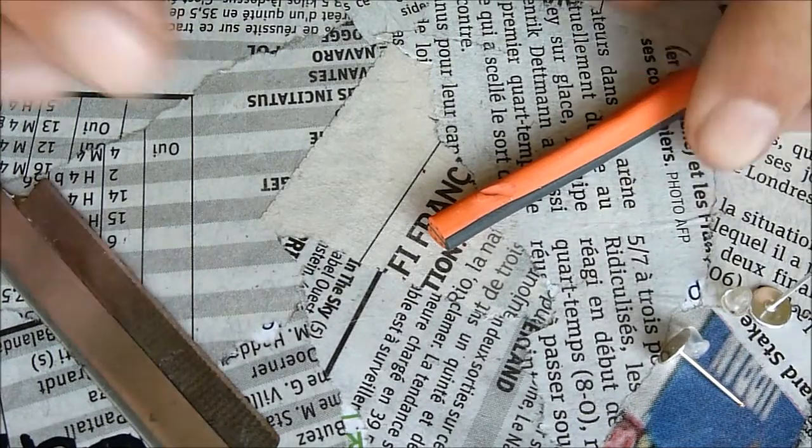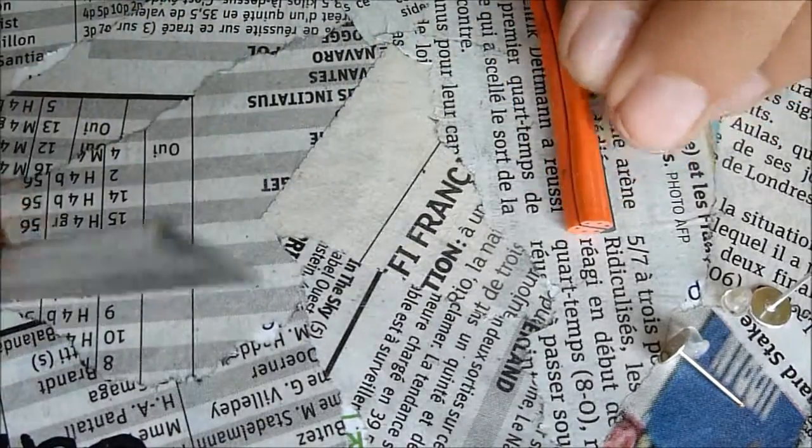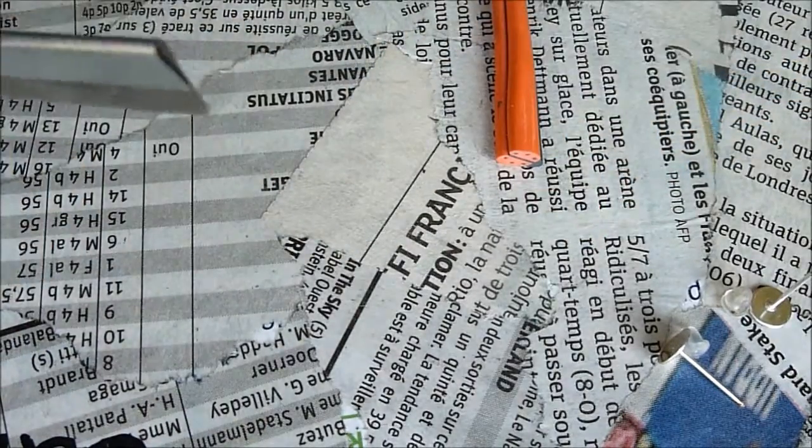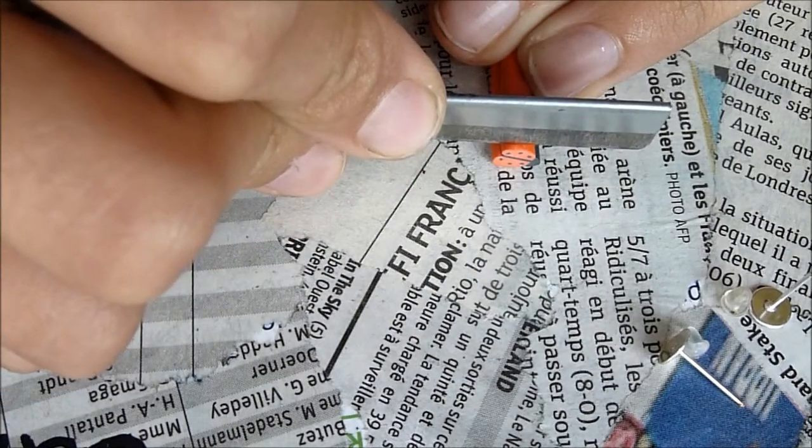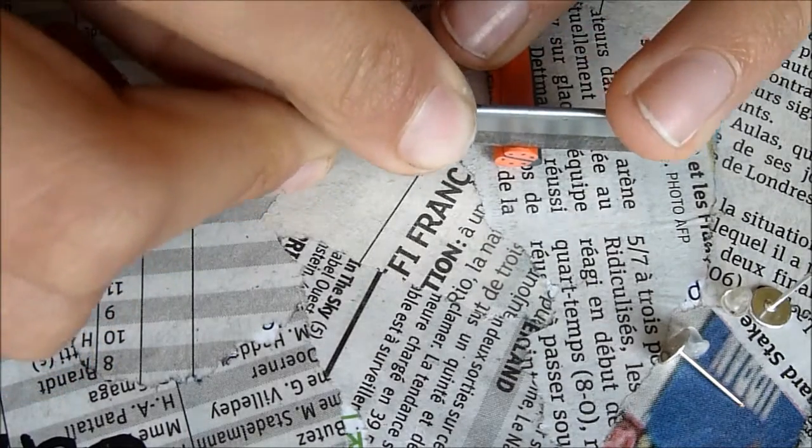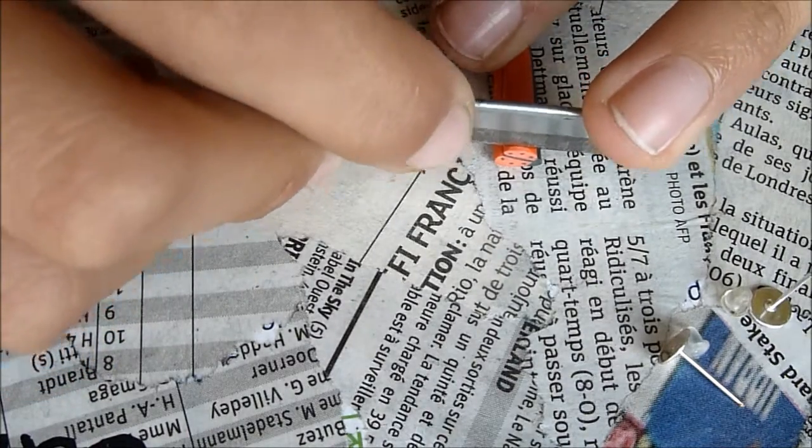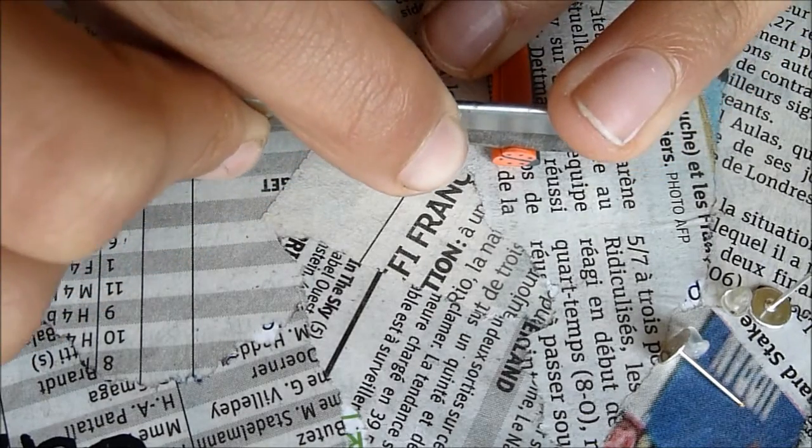Vous allez prendre tout simplement votre canne. Et il va falloir prendre votre lame à canne. Vous pourrez prendre une autre lame, mais ça sera beaucoup plus dur pour couper. En fait, il faut que la tranche ne soit pas trop épaisse. C'est pour ça que si vous avez déjà des tranches prédécoupées, c'est plus simple. Mais ni trop fines.